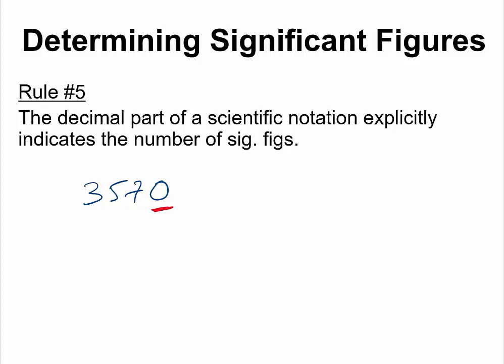To prevent this problem, the best way to write a number in an unambiguous way — the most clear way to indicate the number of significant figures — is to write the number in scientific notation.